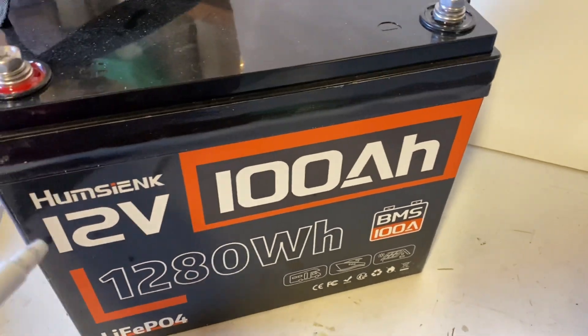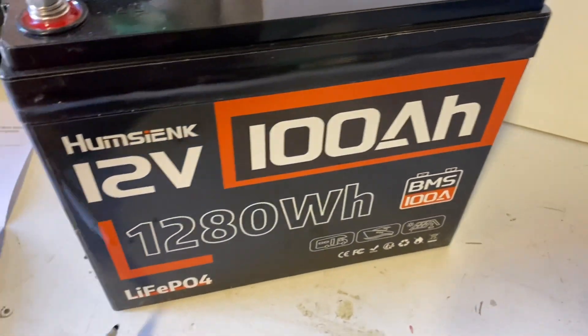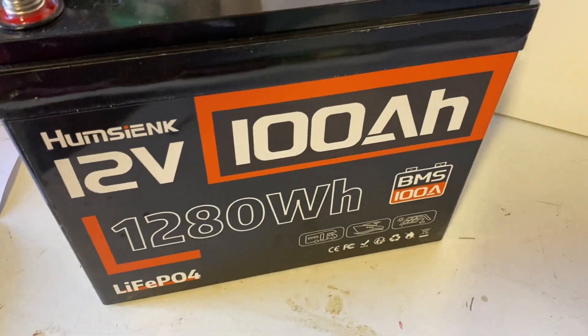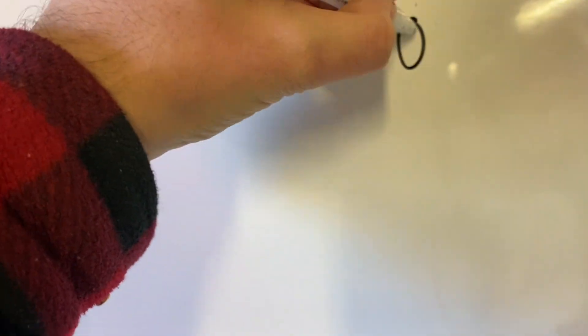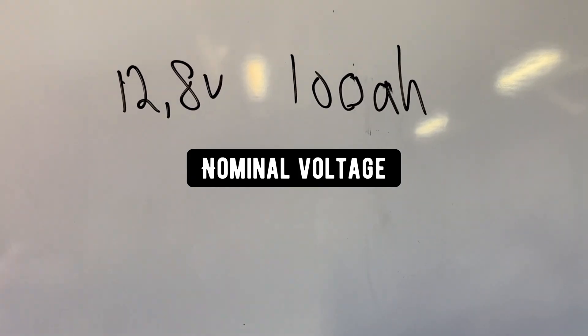Alright, so a 12 volt 100 amp hour lithium iron phosphate battery—well, it's actually 12.8 volts 100 amp hours nominal.